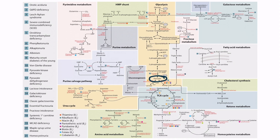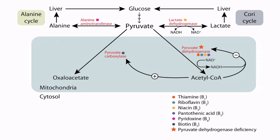Let's zoom in on our map and take a closer look at pyruvate metabolism. This figure provides a good overview and you need to know that pyruvate can be converted into four different molecules. First, pyruvate can be converted into alanine through the enzyme alanine aminotransferase, or ALT. The alanine can then be taken back to the liver and converted into glucose. This process is called the alanine cycle.